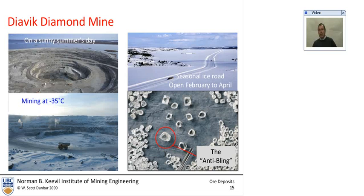This is a picture of the Diavik mine, which is another diamond mine in the Arctic. They mine all year round. This is on a summer's day here. There's a dam here that keeps the lake back from flooding the pit. And like I said, they mine year round. This is at minus 35 degrees, shown on the left here. These mines are just supplied by a seasonal ice road, which is only open from February to April. If you don't get things in during that time period, you have to fly them in, which is very expensive.